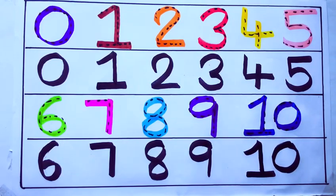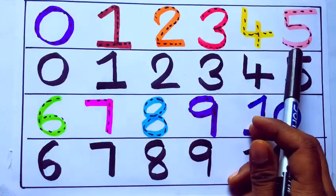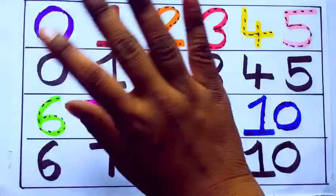Once again, learning numbers: 0, 1, 2, 3, 4, 5, 6, 7, 8, 9, 10. Okay, bye kids!